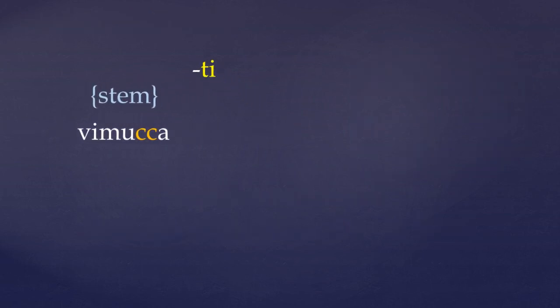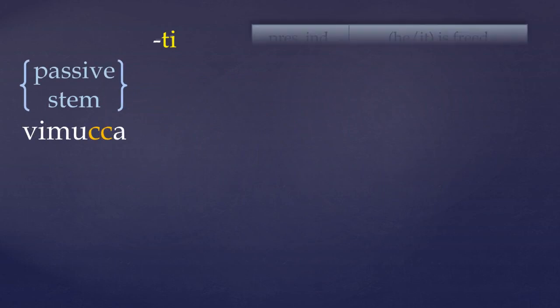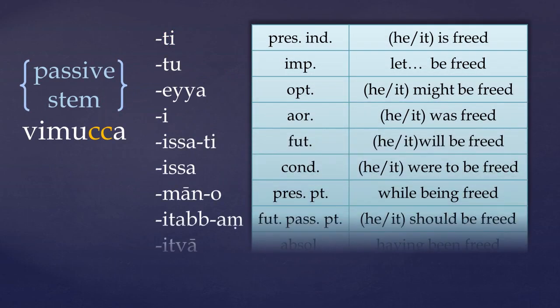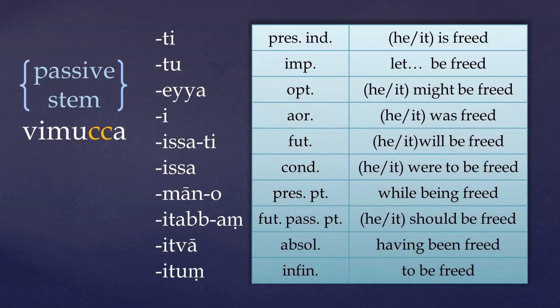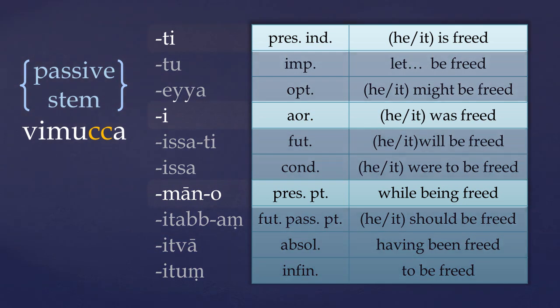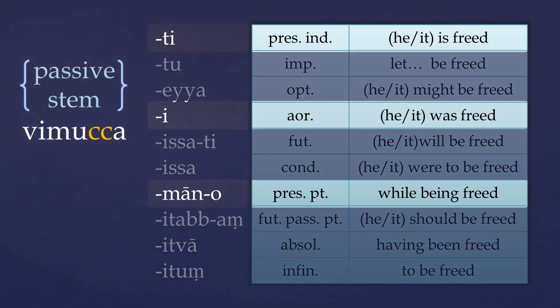Which, theoretically at least, can be inflected into any verb tense or mood. As a result, the passive stem is sometimes called a secondary conjugation, or a secondary derivation — which I must say I always find a little counter-intuitive. To be honest, these inflections are rare on the passive stem, but the most frequent are the passive indicative that we've just seen, the aorist, and the present participle.